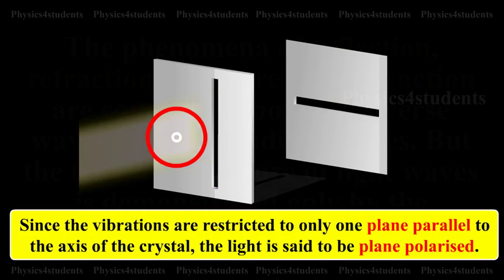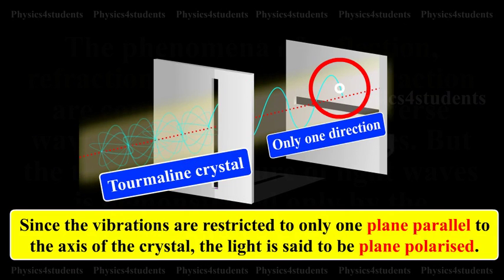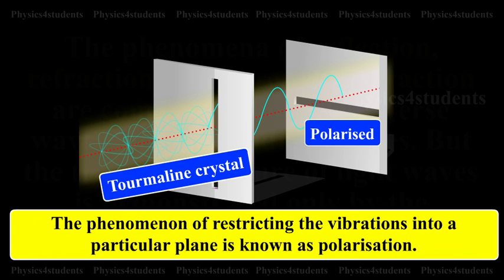Since the vibrations are restricted to only one plane parallel to the axis of the crystal, the light is said to be plane polarized. The phenomenon of restricting the vibrations into a particular plane is known as polarization.